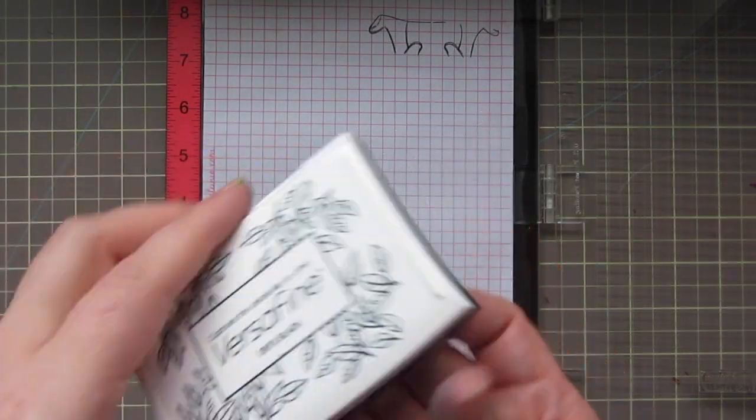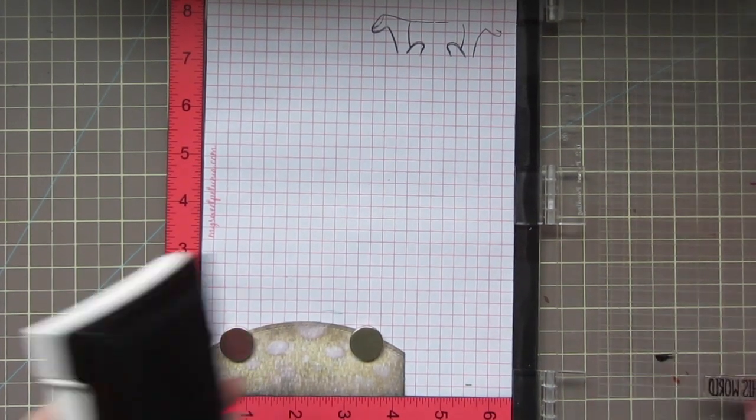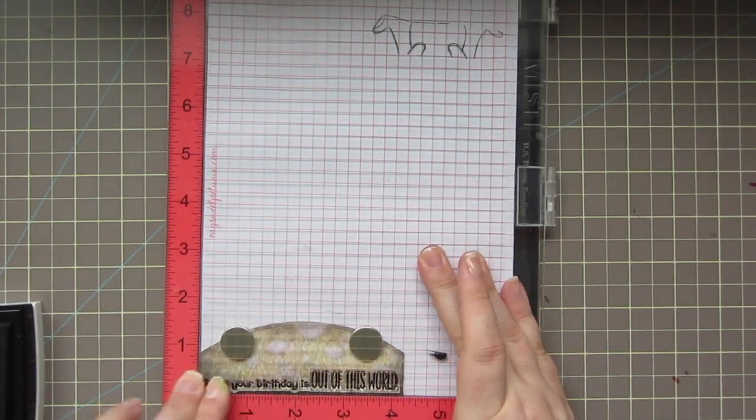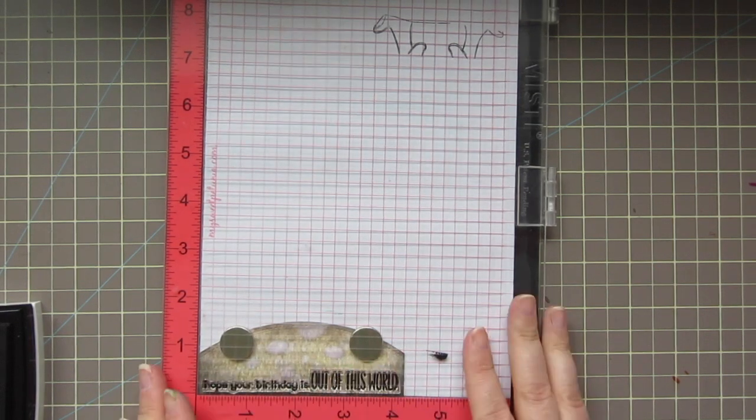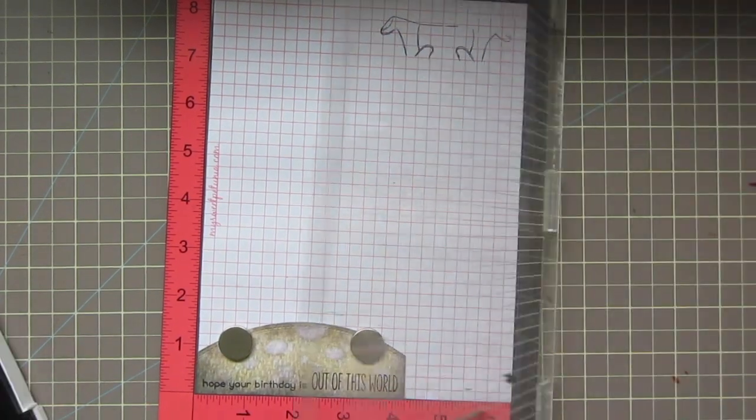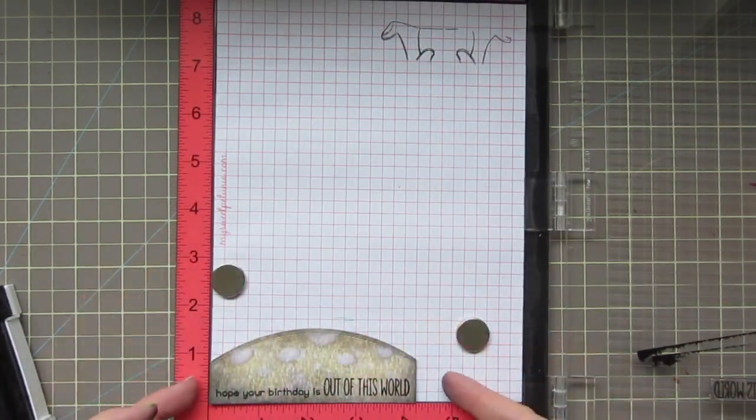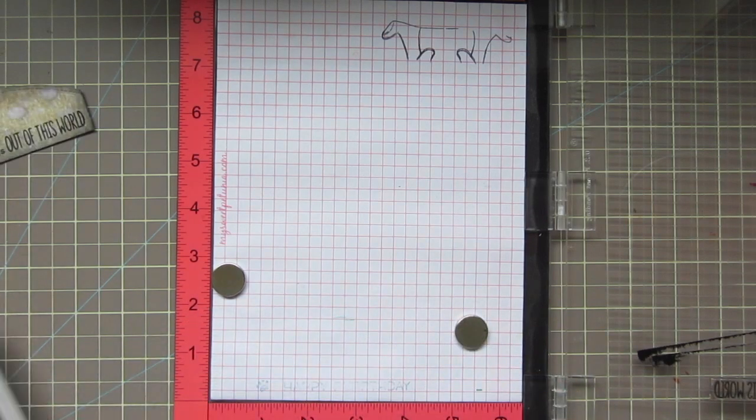I put the moon in my Misti, and I'm inking up my sentiment with some VersaFine Onyx Black ink, because I want it to be nice and bold. And it says, I hope your birthday is out of this world. And I just inked that up a couple of times and stamped that down. And I love that you're able to do that with this tool. I used to dread stamping sentiments until I got this.